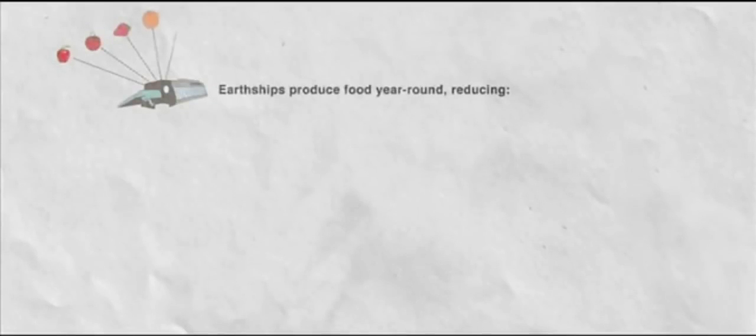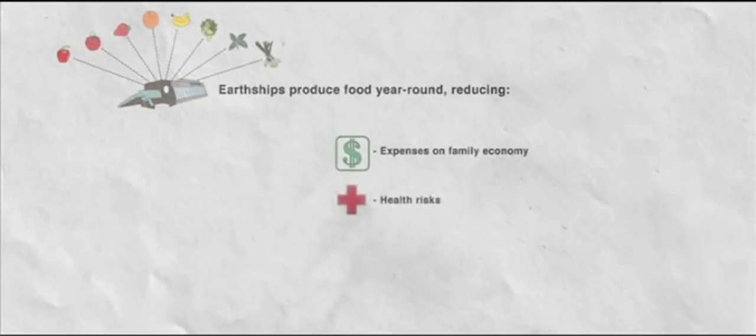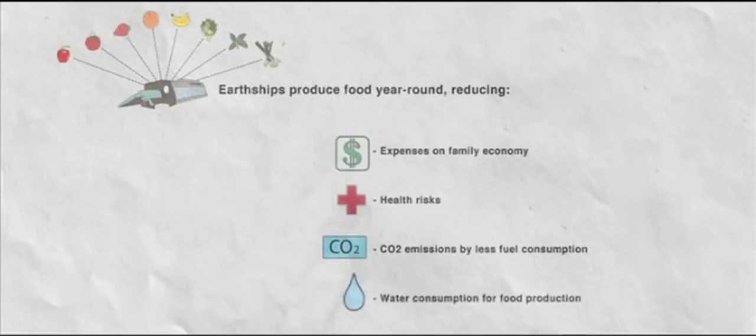Earthships produce food year-round, reducing expenses in family economy, health risks associated to pesticides and contaminants where food is grown, CO2 emissions by less fuel consumption, for example transportation for food imports, and water consumption for food production.